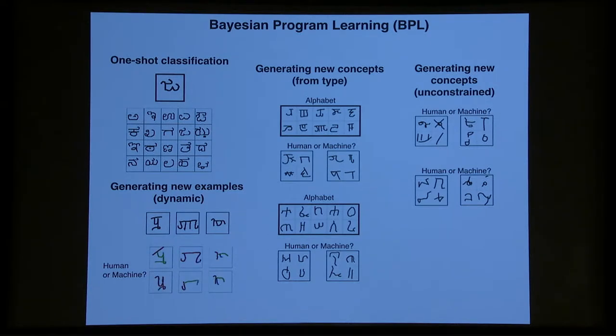We also looked at generating new concepts tasks where you come up with characters that look like they belong to a novel alphabet, and again, compared human versus machines, and also generating new concepts without constraints. And on all these different tasks, the algorithm either reached human-level performance or was difficult to tell whether the behavior was produced by humans or the machines.